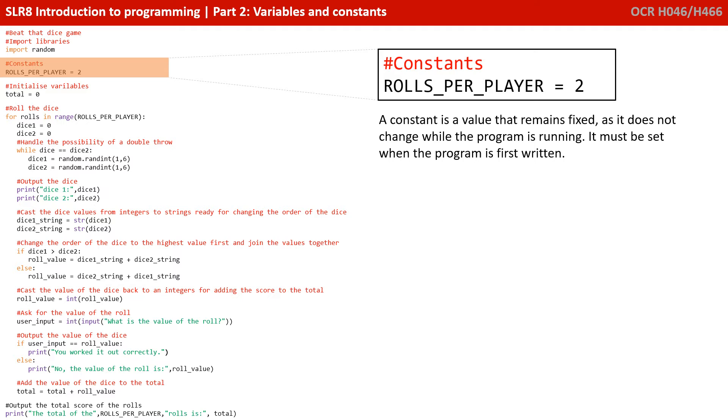If we wanted to implement constants in a Python program, we would have to set a value like we have here, roles per player equals 2, and then we would have to make sure we never actually changed it. In most programming languages, you could actually declare this as a constant, and it would be unable to be changed during program execution.